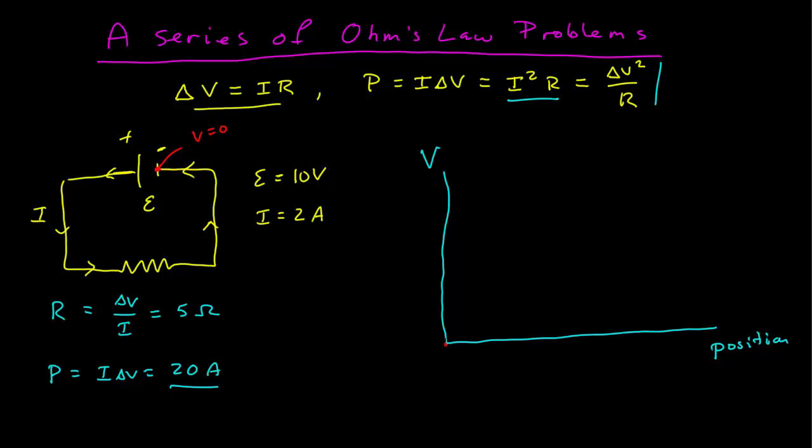I'm going to go first across the EMF, and so the EMF creates a potential difference of 10 volts from the positive to negative. So as I go from the negative terminal to the positive terminal, my voltage increases from 0 to 10 volts.